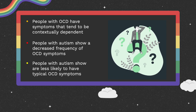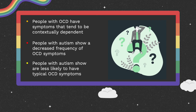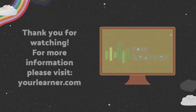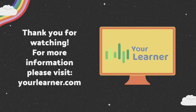On the other hand, some researchers believe that restricted and repetitive symptoms are the same in both disorders, because they have found differences in the same brain region in people with both disorders. Thank you for watching. For more information about OCD and autism, please visit yourlearner.com.